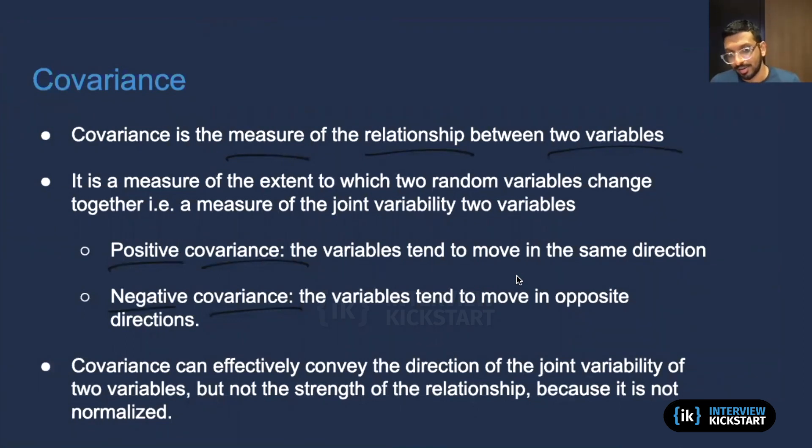But it isn't very good at conveying the strength of the relationship, because the quantities x and y involved are not normalized. And in order for this quantity to actually give you a good sense of how strong the relationship is, this quantity would have to be normalized. But with this information about covariance, let's go forward.